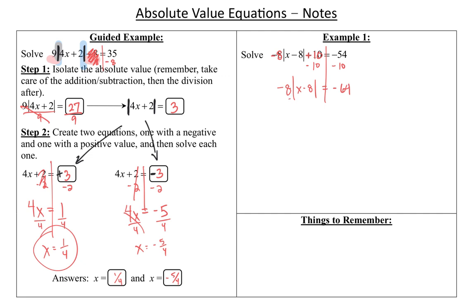So to get rid of the multiplication, we'll use division. Negative divided by a negative is a positive. 64 divided by 8 is 8. So we got the absolute value by itself. Step 1 is done. Step 2 says create two equations, one with a negative, one with a positive. So that's what we'll do. We'll have x minus 8 equals positive 8, and x minus 8 equals negative 8.